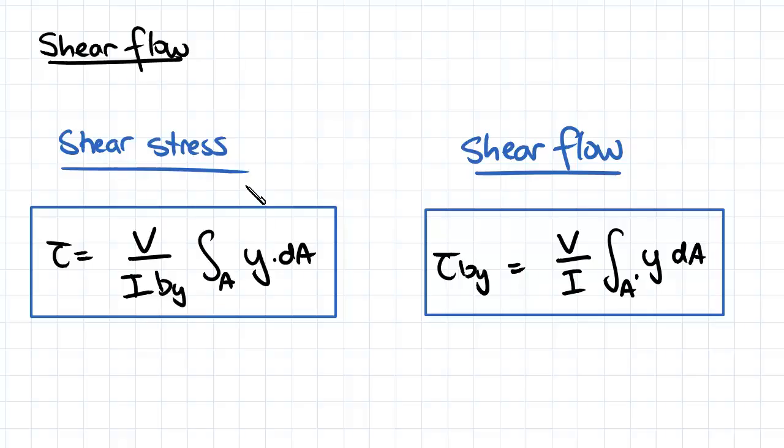So we're now going to introduce shear flow. And what that's useful for is when we have a cross-section which has varying width.